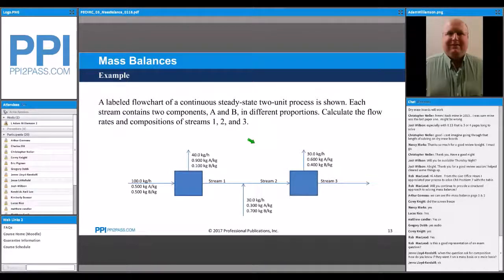Here is another example. We have a steady-state two-unit process shown with components A and B in different proportions. They want the flow rates and compositions of stream 1, stream 2, and stream 3.